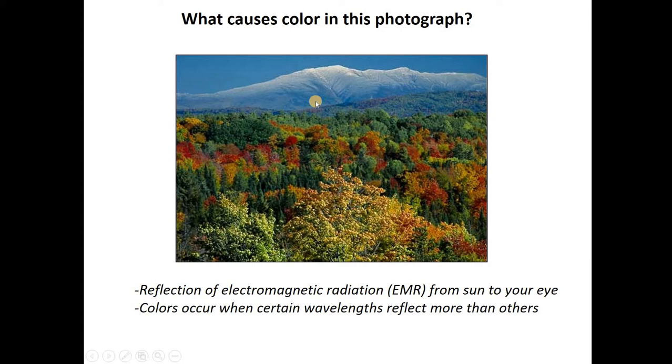Why isn't everything the same color then? Things are different colors because certain wavelengths of light reflect more readily from different types of material. For example, the white snow on top of the mountain is reflecting all wavelengths, and your eye is seeing that as the color white. Some of these green trees are preferentially reflecting green wavelengths of light, and some of the red trees are preferentially reflecting red and of course absorbing other wavelengths of light.